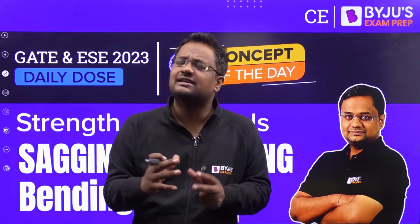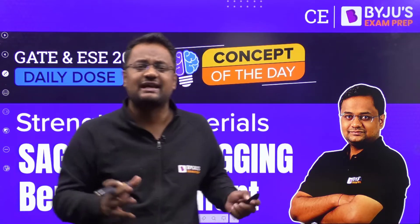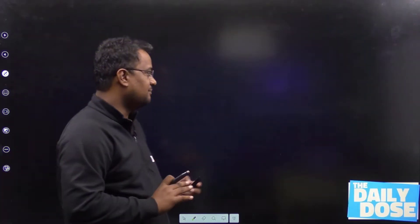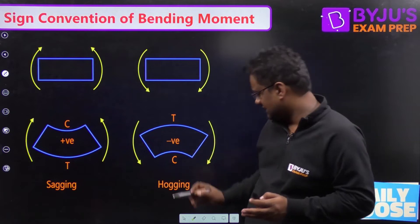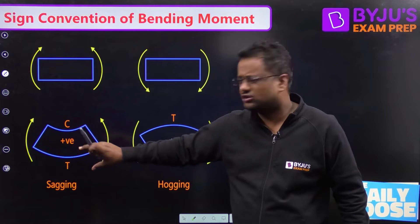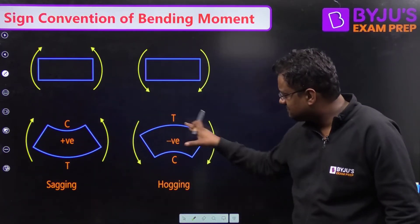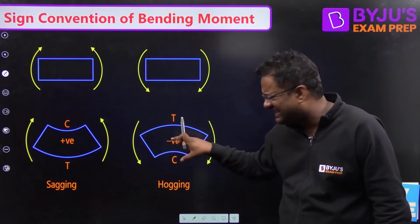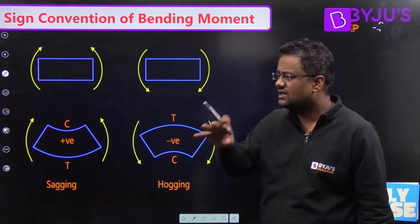There is nothing sagging, there is nothing hogging. There is nothing positive bending moment and nothing negative bending moment — I will prove you. I hope that you are surprised. Usually you say that when a beam is deflected in a concave-up shape, you call it as positive or sagging, although positive has no significance. And when a beam is bending concave-down, you will say it as hogging and call it negative, although that negative/positive has no significance. I will prove you.